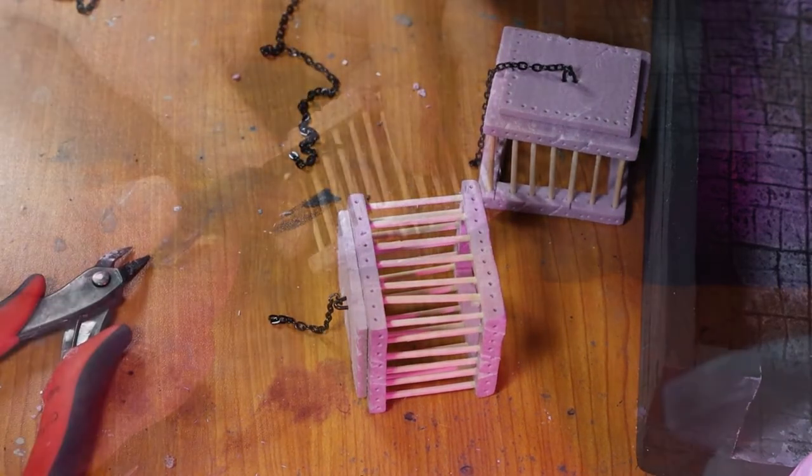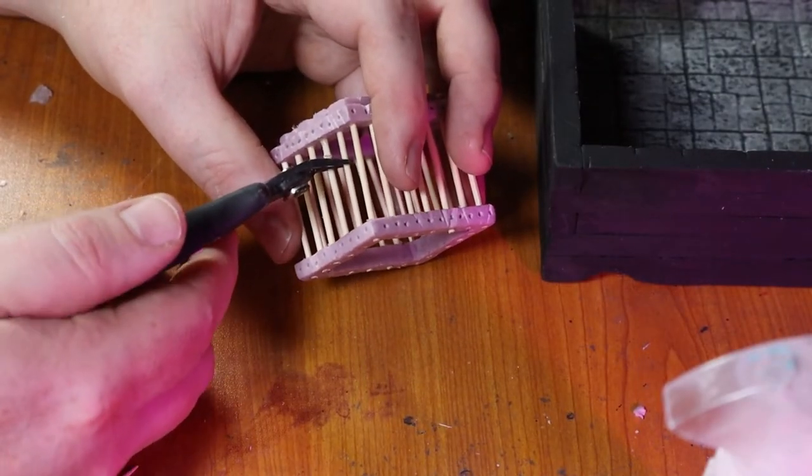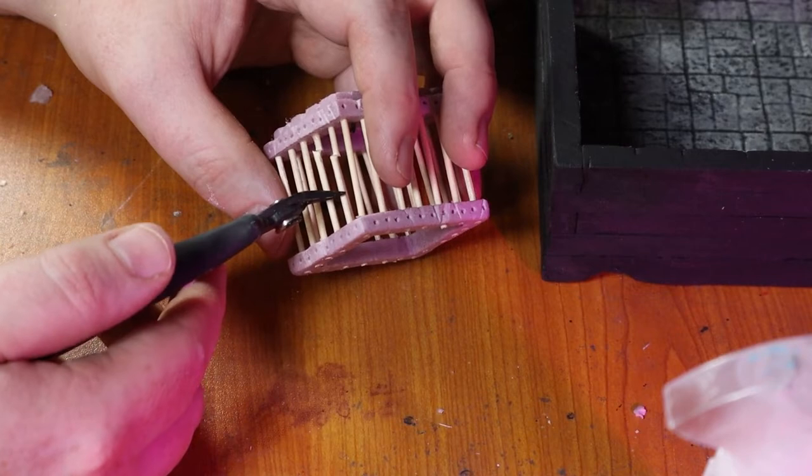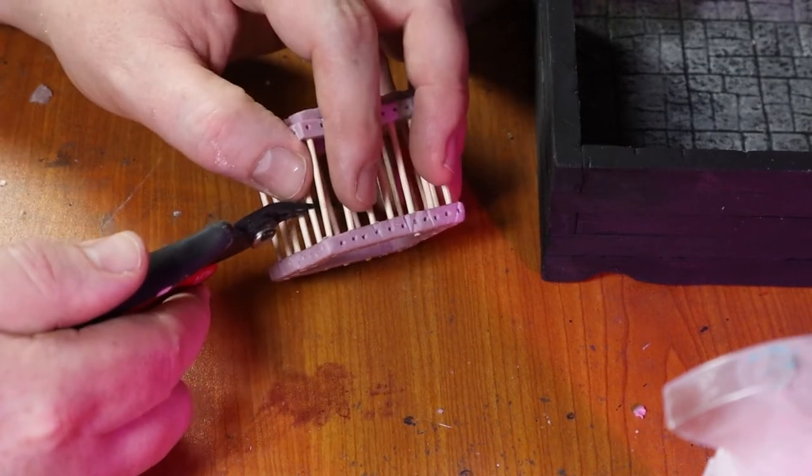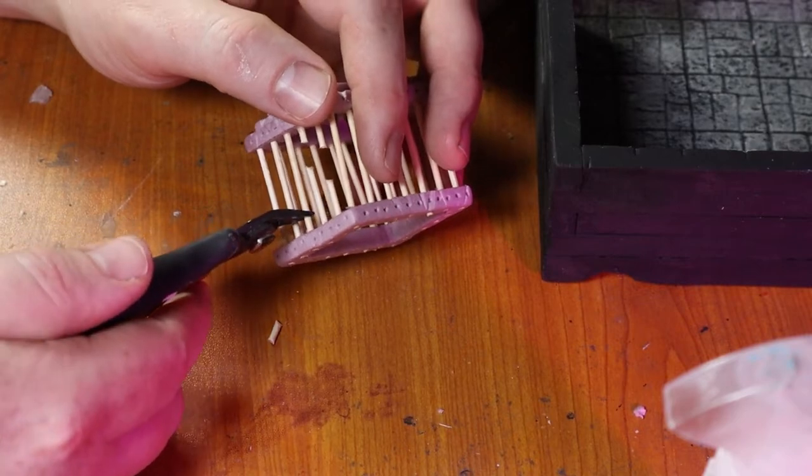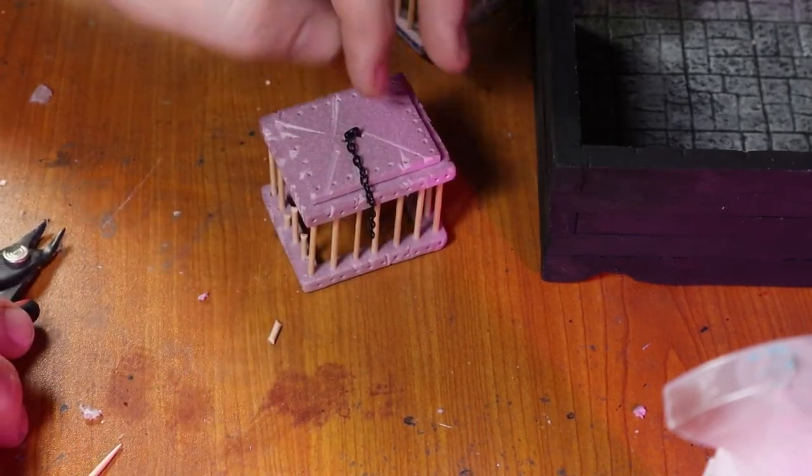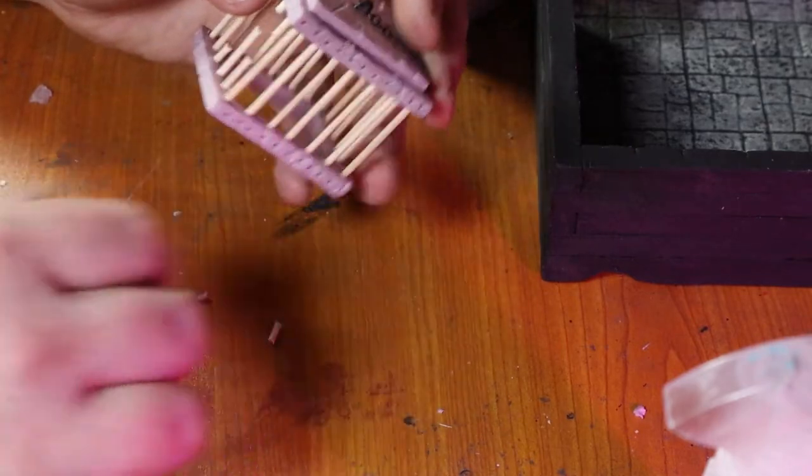Then I clip out some of the pieces of toothpick so it looks like the bars have been damaged a little bit as well. I think if I would have had more time I would have added some thicker wire so I could have bent them and made it look like something had burst out of the cage. Then I paint the cages black with a mix of glue and black paint.